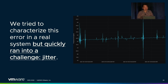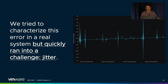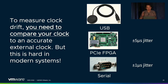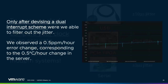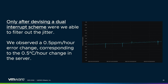So we decided to get hands-on and see how bad things are in a real server. We hooked up a GPS-synchronized clock to our server and started seeing a problem right away — blips all over our graph: jitter. To measure clock drift you need to compare the computer's clock to an accurate external clock, which is a lot harder than it seems. Modern computers are very asynchronous, so delivering an external clock signal on time requires significant work. On our servers, we could only reliably deliver a high-priority, low-latency interrupt via the serial port, and we eventually devised a dual-interrupt scheme that filtered out all the jitter and gave us relatively clean graphs.